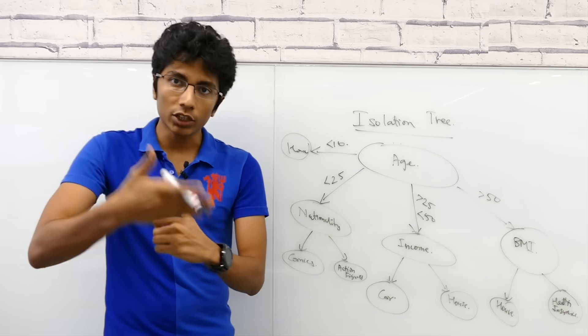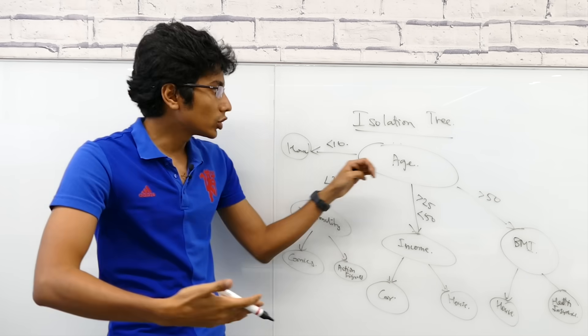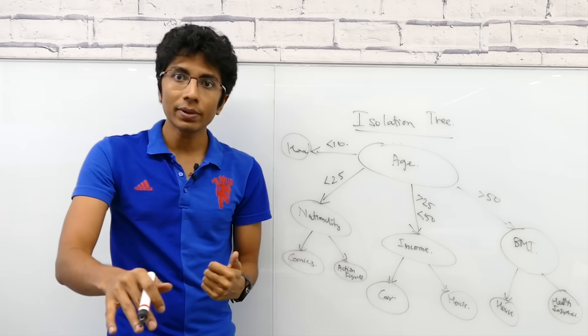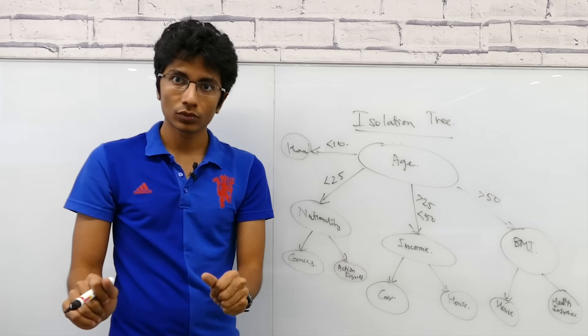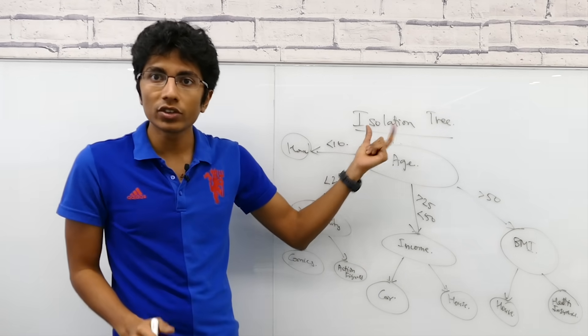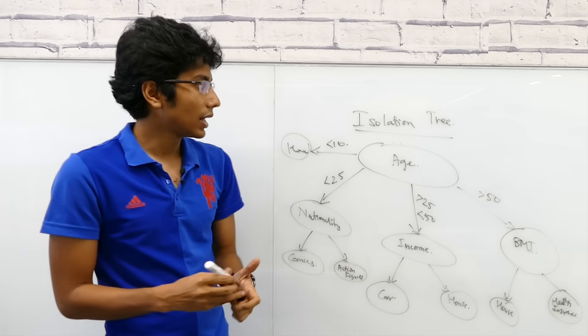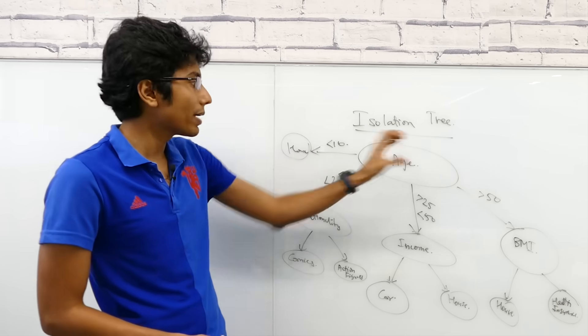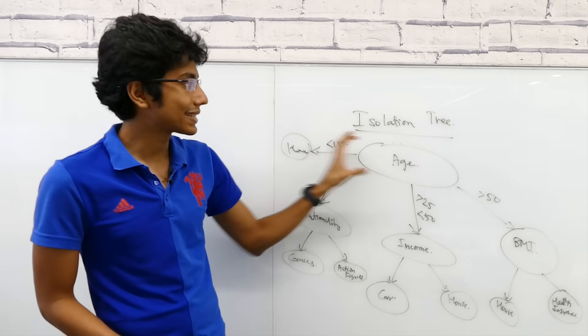I'm assuming that the number of partitions required on the data to set you apart is going to be really, really low. That also means that you are an anomaly. That's what the isolation tree is based on in principle. And if you run your time series data through the isolation tree, you should be able to find such anomalies using this kind of pattern.